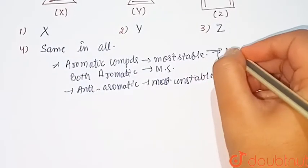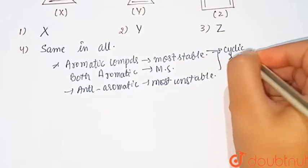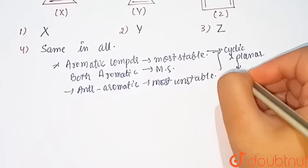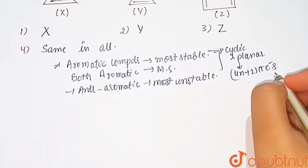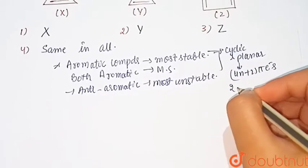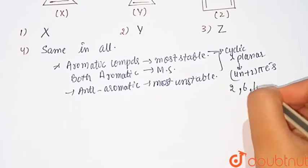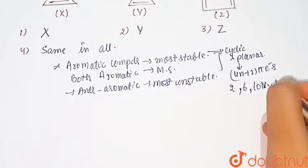Aromatic compounds are those compounds which are cyclic, planar and follow 4n+2 and have 4n+2 pi electrons. Means 2, 6, 10 and so on pi electrons.